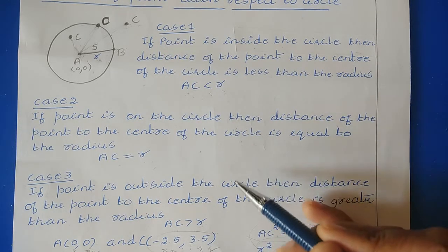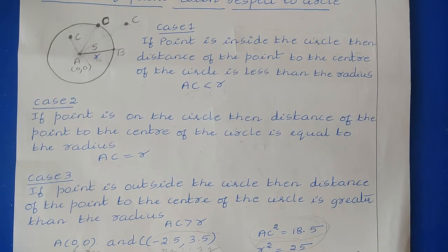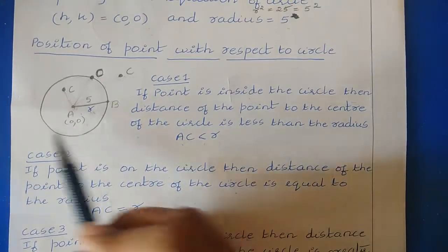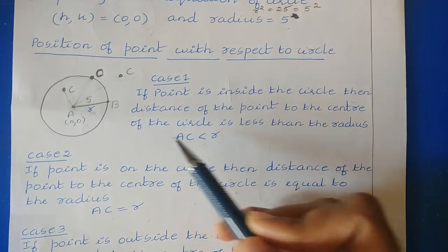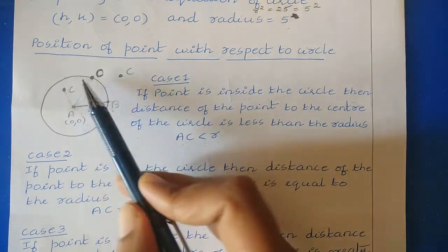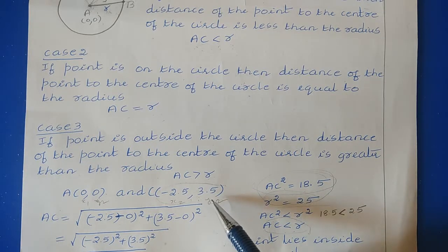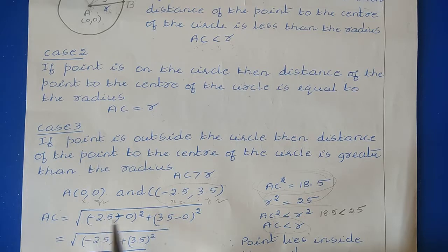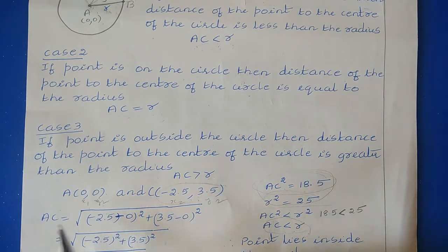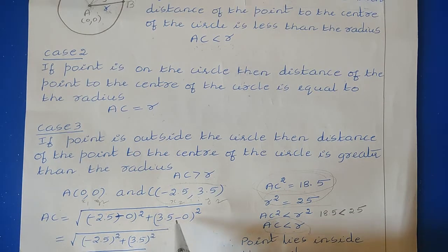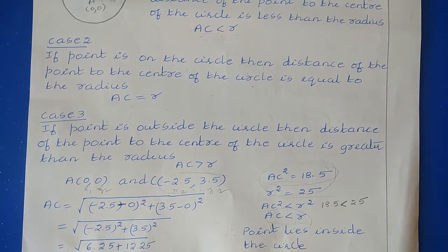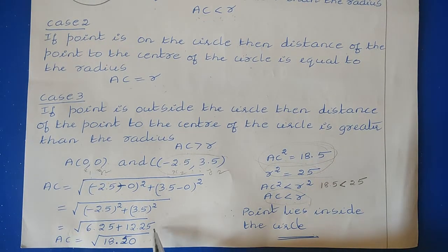Based on these three cases we decide the region. The center is (0, 0) and the given point is (−2.5, 3.5). Using the distance formula — square root of (x₂ − x₁)² + (y₂ − y₁)² — we get AC = √((−2.5 − 0)² + (3.5 − 0)²) = √(6.25 + 12.25).